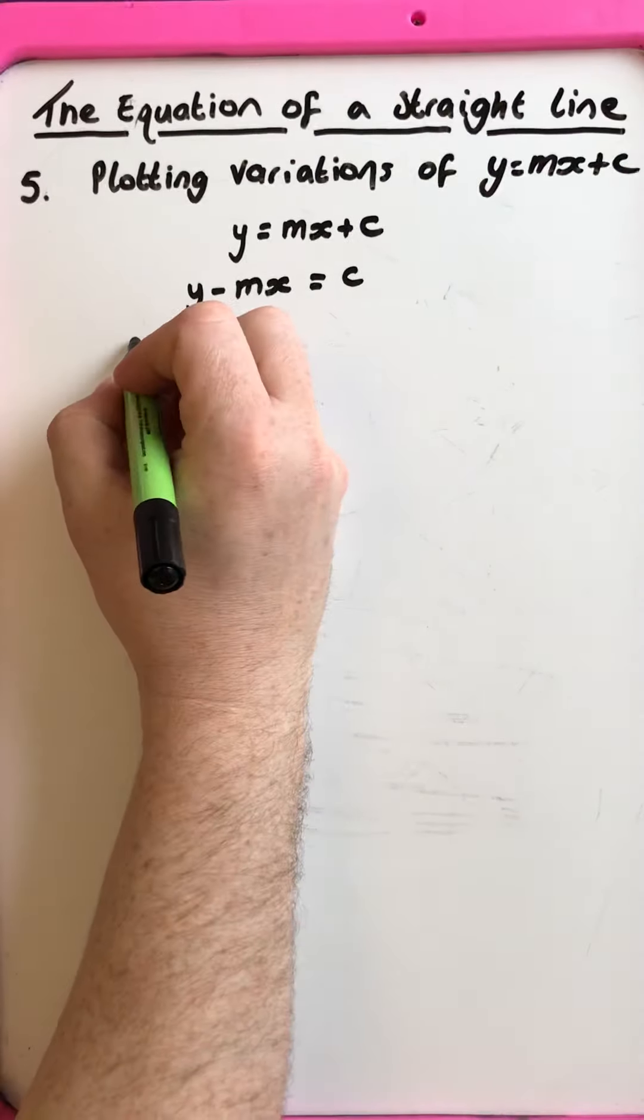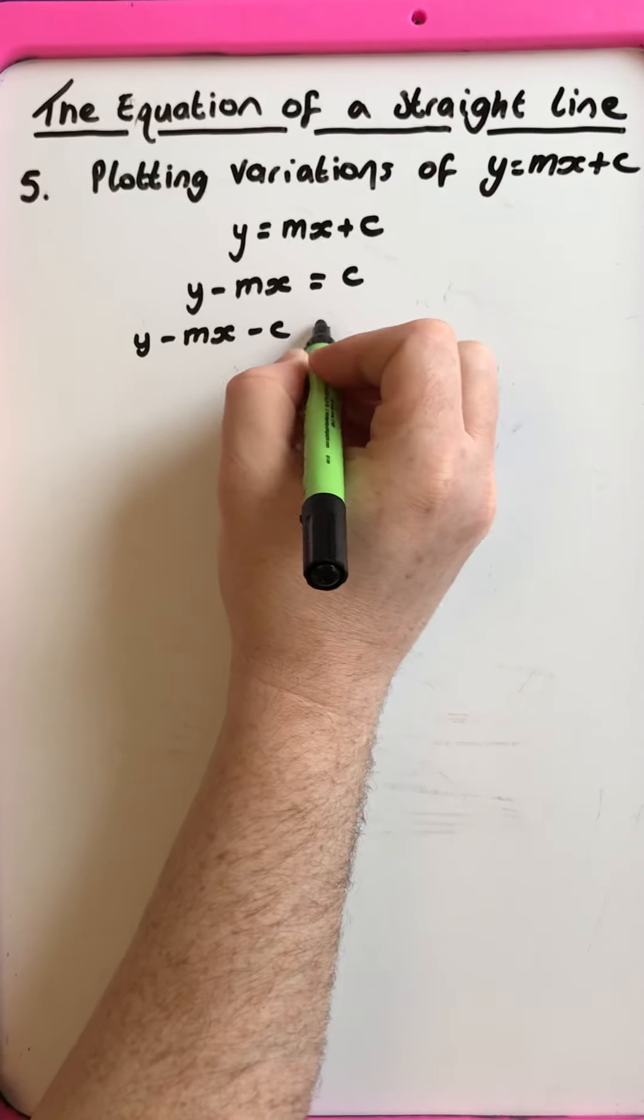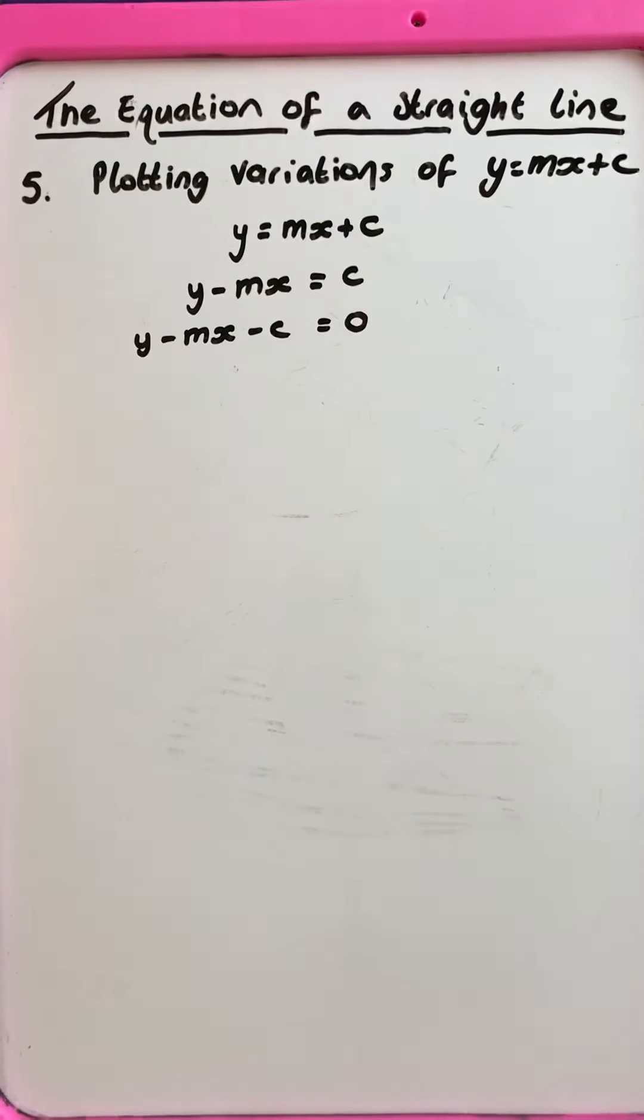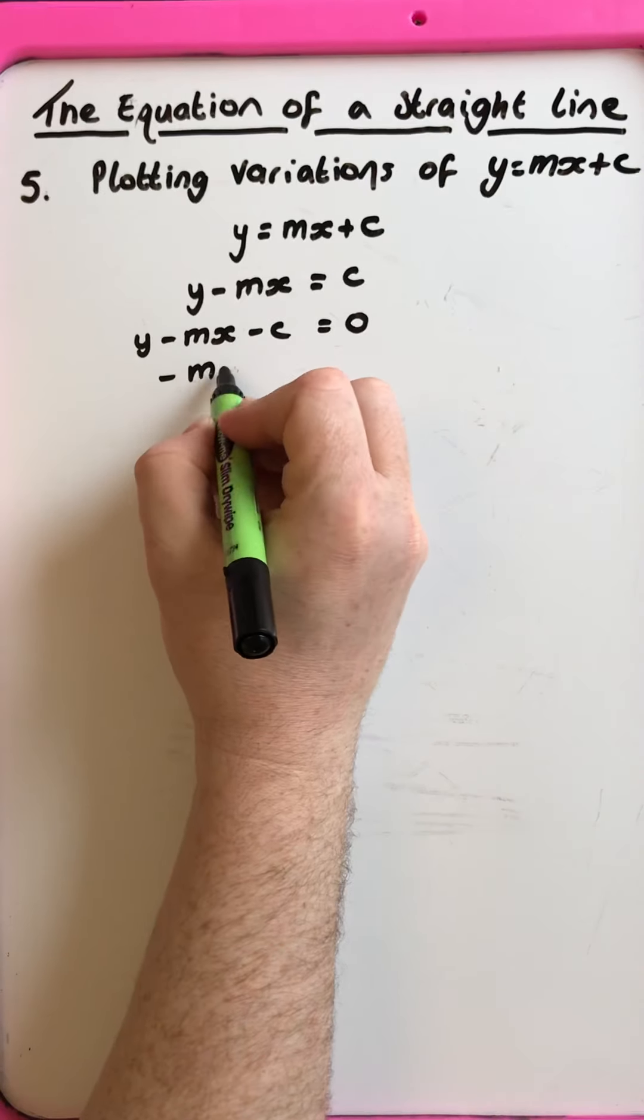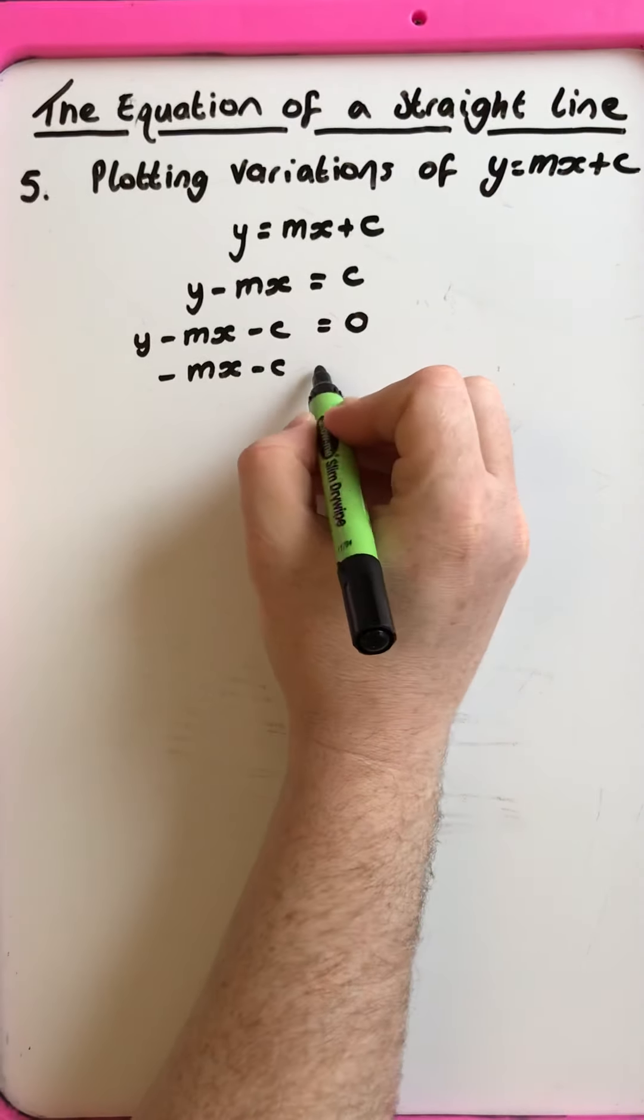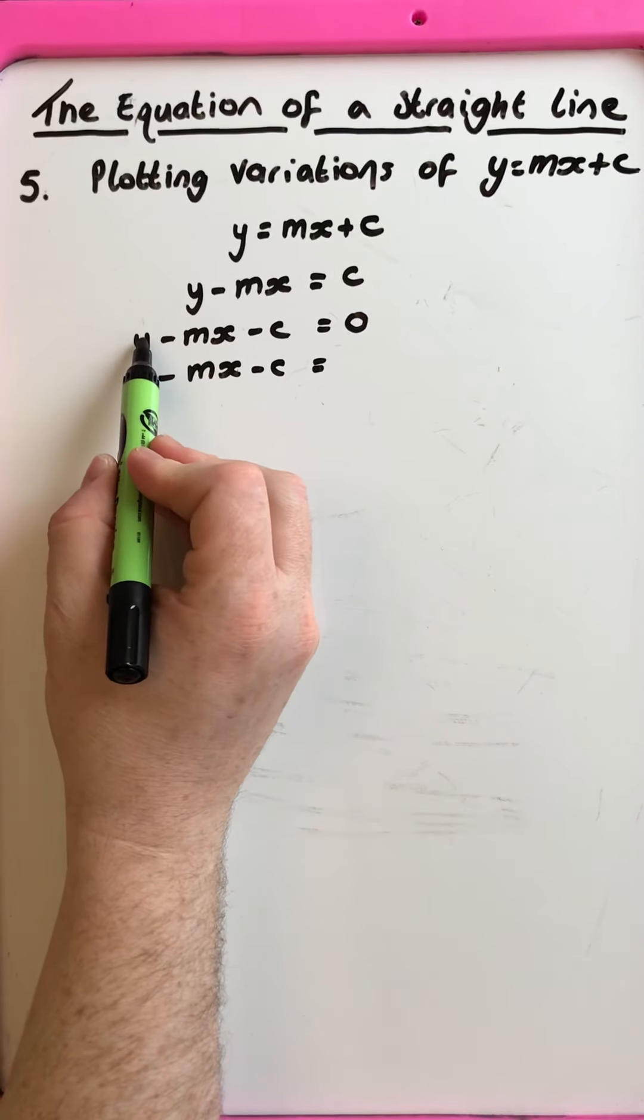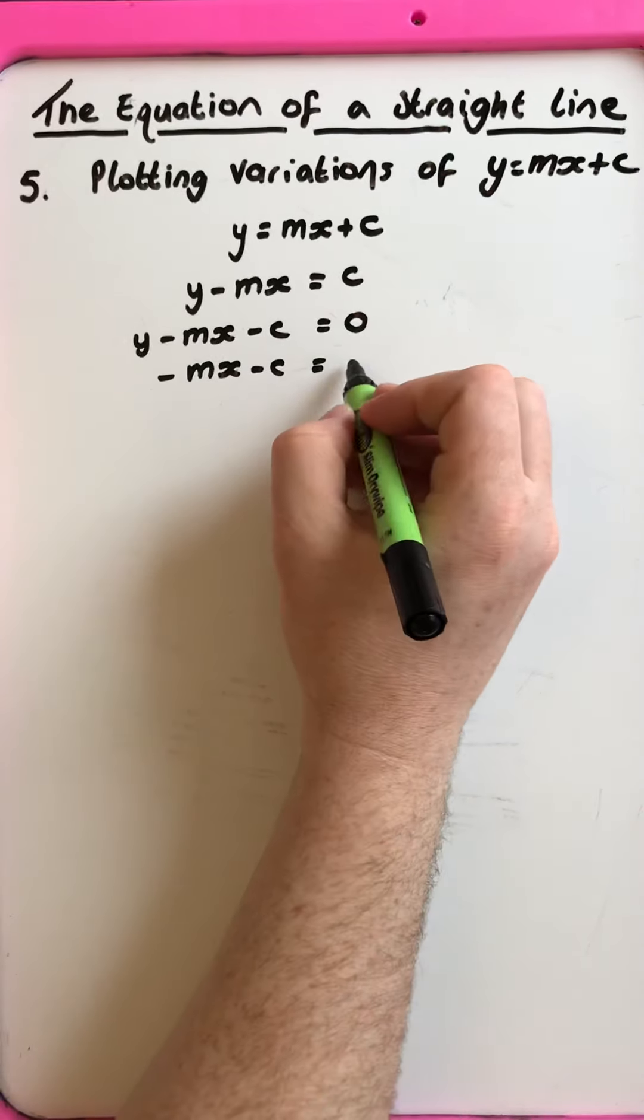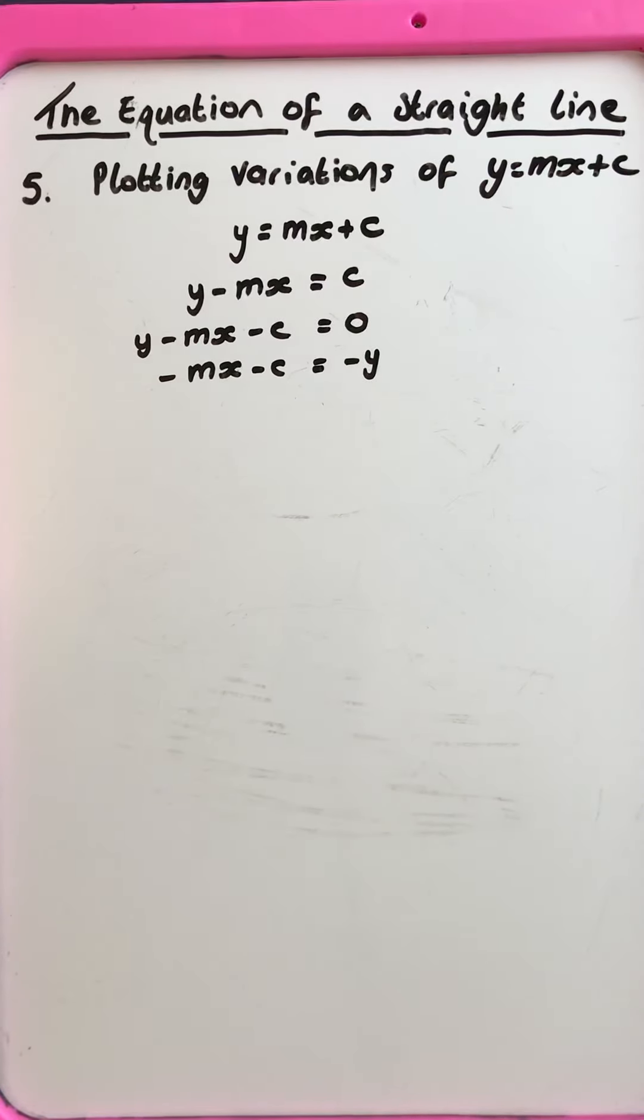How about this? Equals zero. So that's another variation and then we can keep varying that just by changing the side and changing the operation. Positive y, negative y.